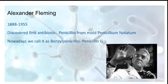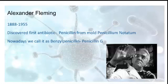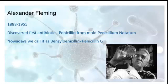Alexander Fleming is well known as the first person to discover an antibiotic — penicillin — which is still in use today. He found it from the mold Penicillium notatum when he observed that mold growing on his plates was killing microorganisms. This compound is now called benzyl penicillin or penicillin G.